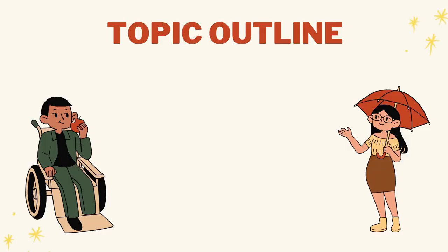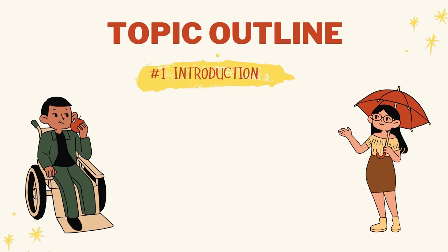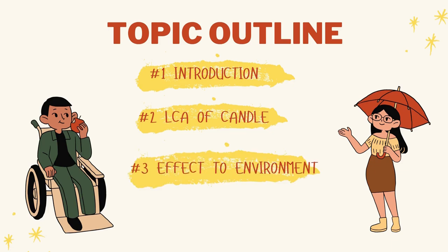Today for the life cycle assessment of candle, the topic outline will consist of four major parts: 1. The introduction of the candle, that will explain about the candle and its history. 2. The life cycle assessment of candles, which will explain about the production of candles. 3. Impact of candles to the environment, and lastly the fourth one is the mitigation measures.